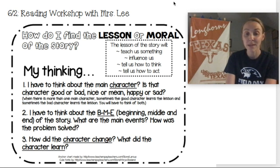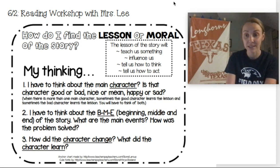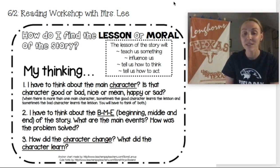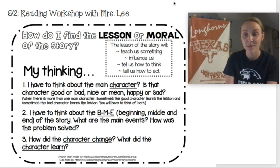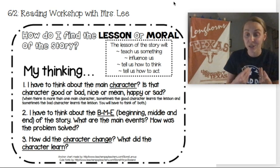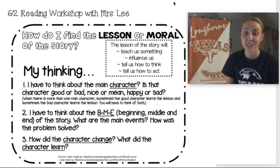Next, we want to be thinking about the beginning, the middle, and the end of the story — thinking about what the main events are and especially how the problem is solved. Because oftentimes the lesson that we learn is connected to how the problem is solved. And then last, we want to be thinking about how did the character change, and what did the character learn? Then we want to think about what's a lesson we could learn from what the character learned as well.